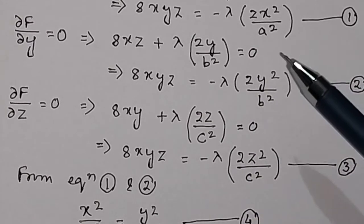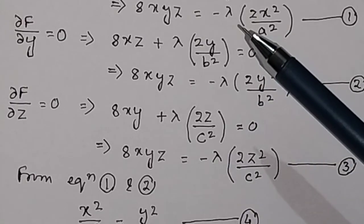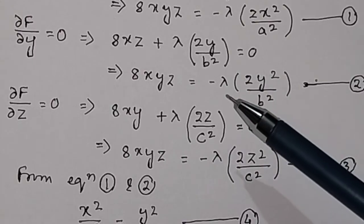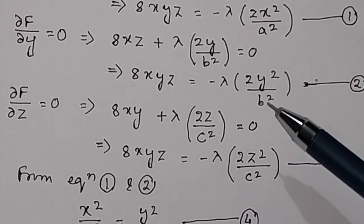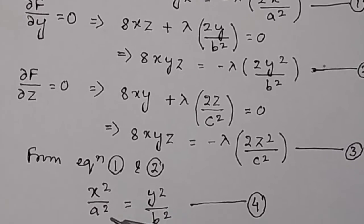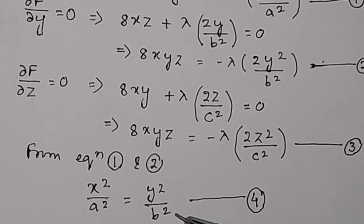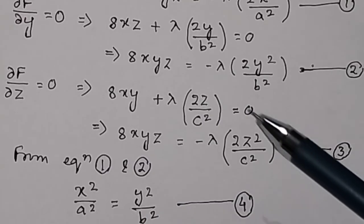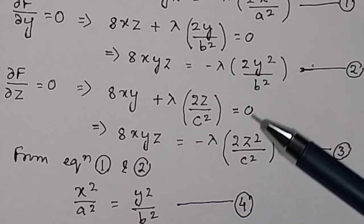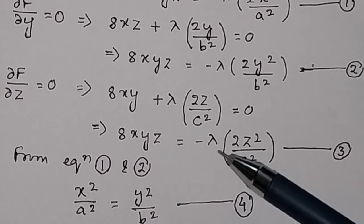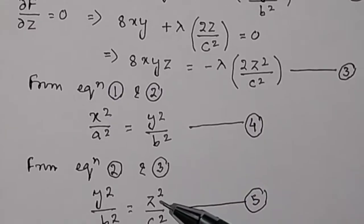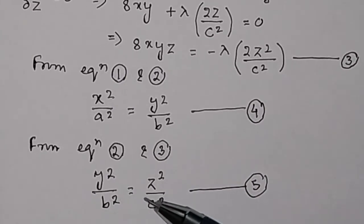From equations 1 and 2, we have −λ(2x²/a²) = −λ(2y²/b²), which gives x²/a² = y²/b². This is equation 4. Similarly, from equations 2 and 3, −λ(2y²/b²) = −λ(2z²/c²), which gives y²/b² = z²/c². This is equation 5.